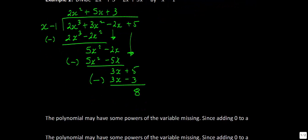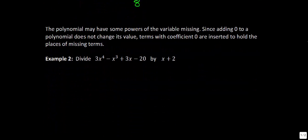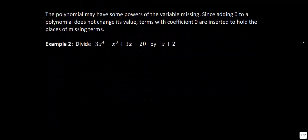Let's take a look at example 2. The polynomial may have some powers of the variable missing. So right here we have x to the 4th, x cubed, and then we go straight to x — we don't have an x squared term. If that's ever the case, what I want you to do is slip in a 0x squared. So if we're ever missing any powers or variables, just write it as 0x squared.